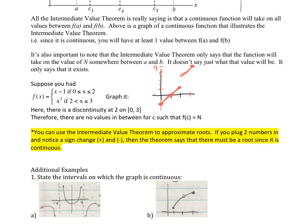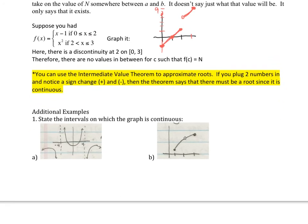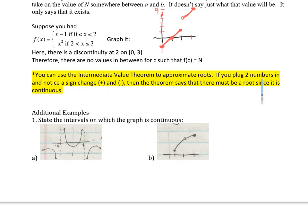Here's how we used to use the Intermediate Value Theorem to approximate roots. If you plug two numbers in and notice a sign change between positive and negative, then the theorem says there must be a root — as long as it's continuous. So if I have some continuous function with negative values here and positive values there, what is between a negative and a positive? A zero. That's similar to what your calculator does when it asks for the left bound and upper bound when solving for zeros.